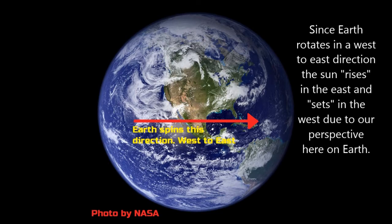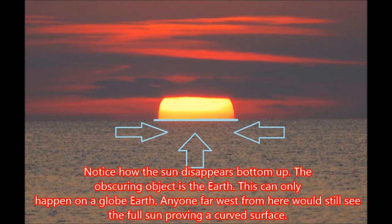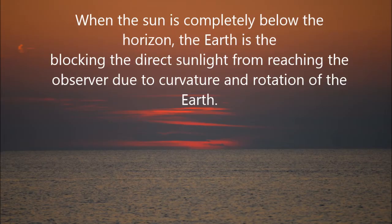Since earth rotates in a west to east direction, the sun rises in the east and sets in the west due to our perspective here on earth. Notice how the sun disappears bottom up. The obscured object is the earth. This can only happen on a globe earth. Anyone far west from here would still see the full sun, proving a curved surface. When the sun is completely below the horizon, the earth is blocking the direct sunlight from reaching the observer due to curvature and rotation of the earth.